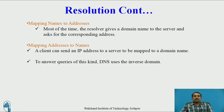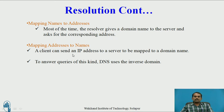Next is mapping names to addresses. Most of the time, the resolver gives a domain name to the server and asks for the corresponding addresses. In reverse — mapping addresses to names — a client can send an IP address to a resolver to be mapped to a domain name. To answer queries of this kind, DNS uses the inverse domain. The user sends the IP address and requests the required information, and the user gets a satisfied response.